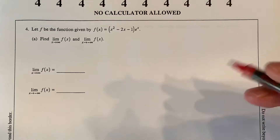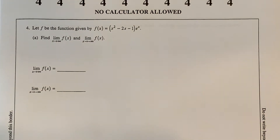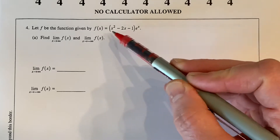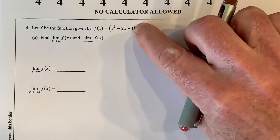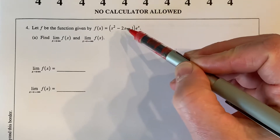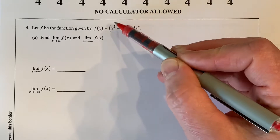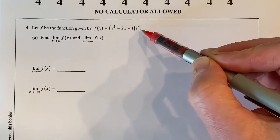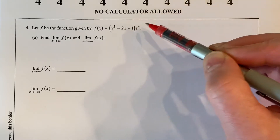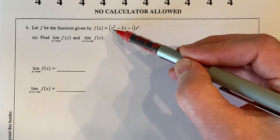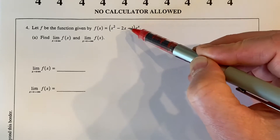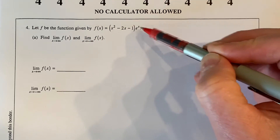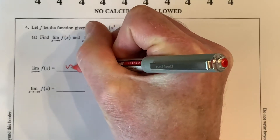A lot of people get freaked out about this, but don't. This is not a big deal. You just have to think a little bit. Let's look at infinity first. By plugging infinity in — this is a parabola, x squared minus 2x minus 1. As you go to the right with an upward parabola, it goes up to infinity. And e to the x is an exponential function that also goes up to infinity. Both are going to infinity, so huge times huge is positive huge — that's infinity.